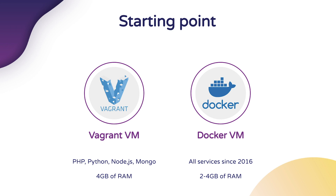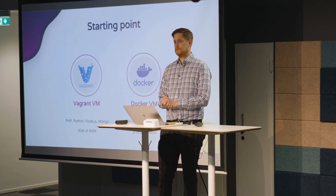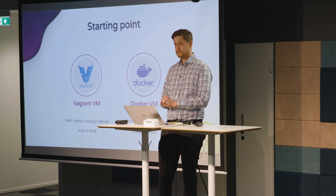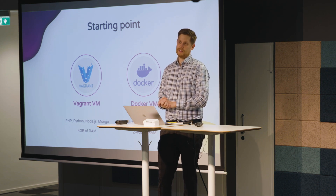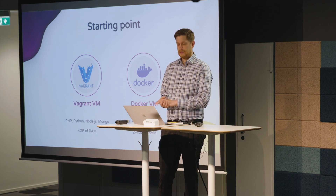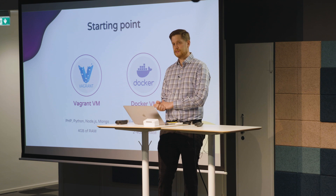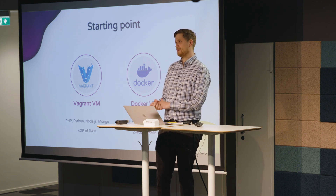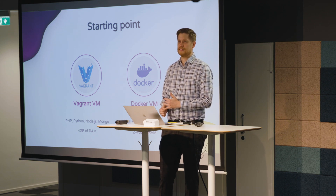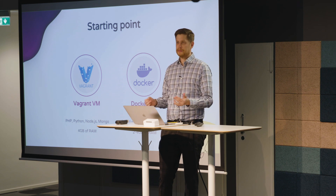Where we started historically was a Vagrant-based virtual machine that was running our PHP monolith and then some Python and even Node.js code, and had a MongoDB database — at one point also Postgres — so it was quite a lot of stuff. It was also quite easy to mess up, because the virtual machine contained state, and people were reluctant to provision it from scratch. So you might run some random commands on that machine, ending up in an ever-so-slightly different state from where you're supposed to be, and you'd run into weird random errors.